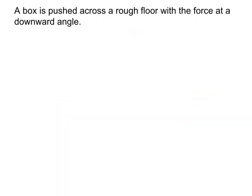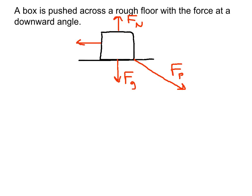Now we'll try a different one. Box pushed across the rough floor at a downward angle. So we're going to take our box and it's on a rough floor. That means there's friction and it also means there's normal force. But our angle that we're pushing with is at a downward angle. So we'll say it's off this way. We'll call that FP for push. We're going to have normal force from the floor, force of gravity, friction going this way.